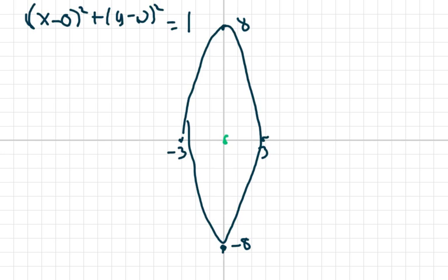So my equation's going to be x minus 0 squared plus y minus 0 squared equals 1. Now, the length of the vertical axis is the longest. So this is going to be my a portion.